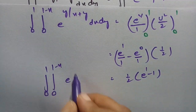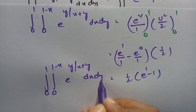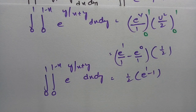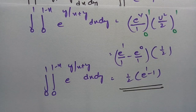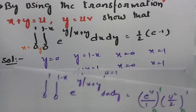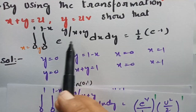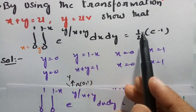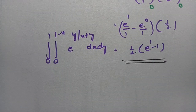Therefore the double integral from 0 to 1 and 0 to (1 minus x) of e^(y/(x+y)) dx dy equals half times (e minus 1), which is exactly what was asked to show. The procedure involves transforming the region, drawing the figure, finding the Jacobian, and evaluating.